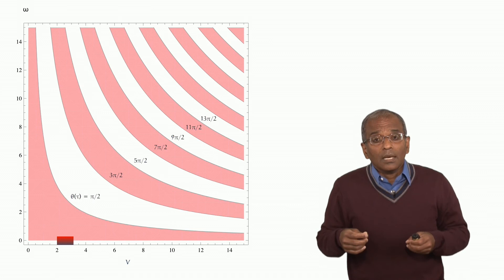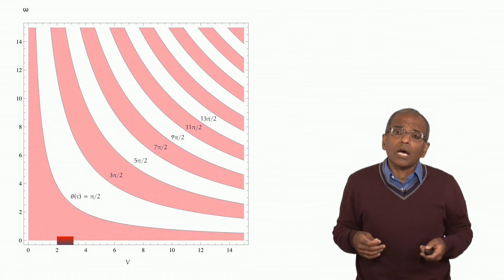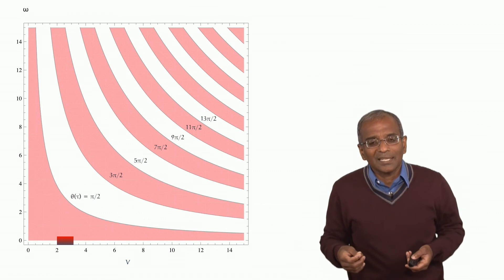If you translate that into radians, that corresponds to somewhere around 225 to 250 radians per second.